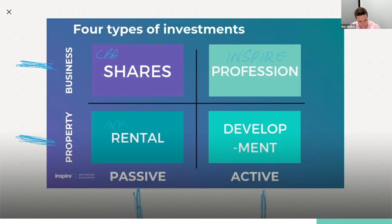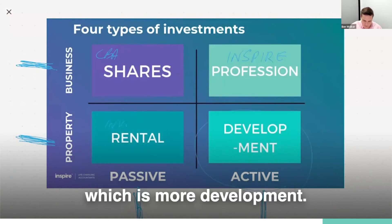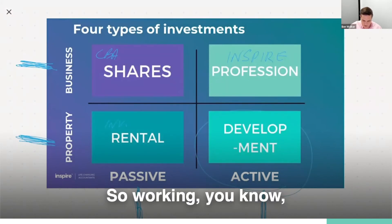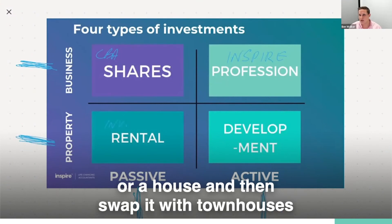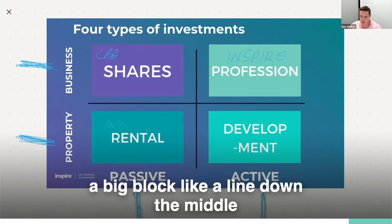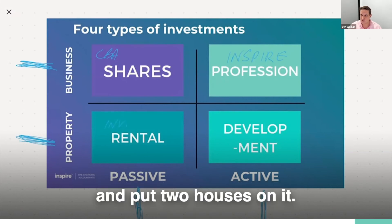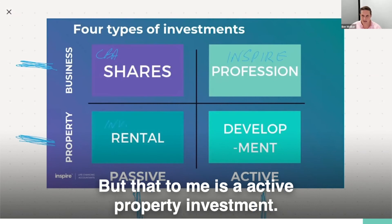Versus an active property investment, which is more development. So you might buy a block of land or a house and then swap it with townhouses, or do a splitter block — take a big block, whack a line down the middle and put two houses on it. All sorts of different options there. But that to me is an active property investment.